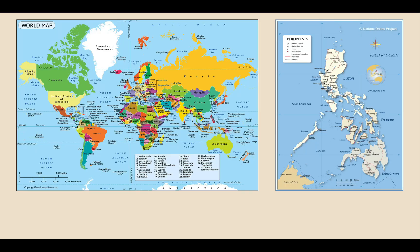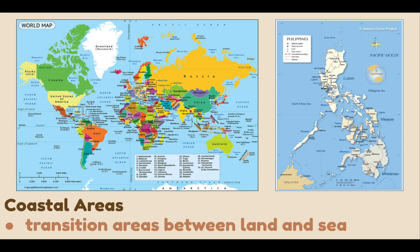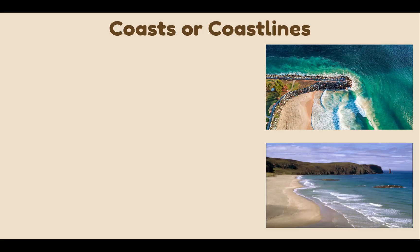I want you to study these two maps. Pay particular attention to the outlines of the continents. These outlines of the islands are called coastal areas. Coastal areas are transition areas between land and sea, sometimes called coasts or coastlines. Coasts have many different features, such as caves and cliffs, beaches, and mudflats.